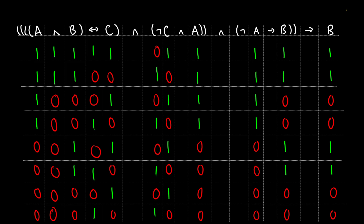Let's do not C and A. That's going to get information from not C and from A, and it's true only if both of those are true. In the first row we have zero and one, that's zero. One and one, that's one. Zero and one, that's zero. One and one, that's one in row four. In row five, zero zero gives us zero. Sixth row: one and zero, that's zero. Seventh row: zero zero, that's zero. And eighth row: one and zero, that's zero. So it's only true in rows two and four.